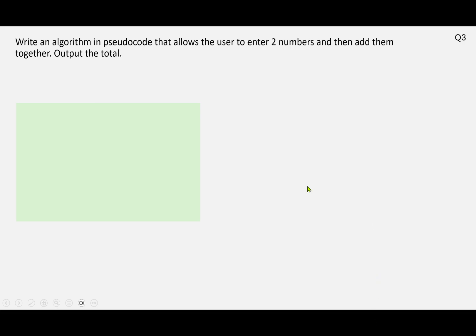Okay, question 3. Write an algorithm in pseudocode that allows the user to enter two numbers and then add them together. Output the total.